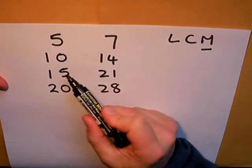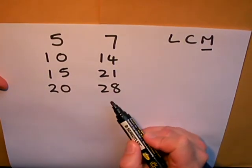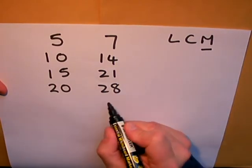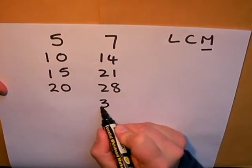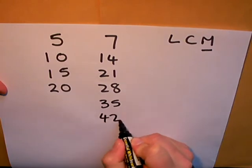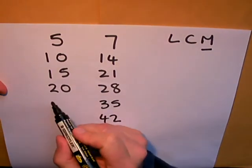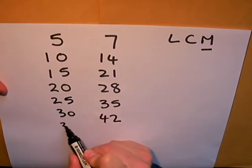At the moment, you can see there are no numbers that happen to be in both lists, so I need to go on a little bit further. After 28, we get 35, 42, and if we continue the 5s: 25, 30, 35.